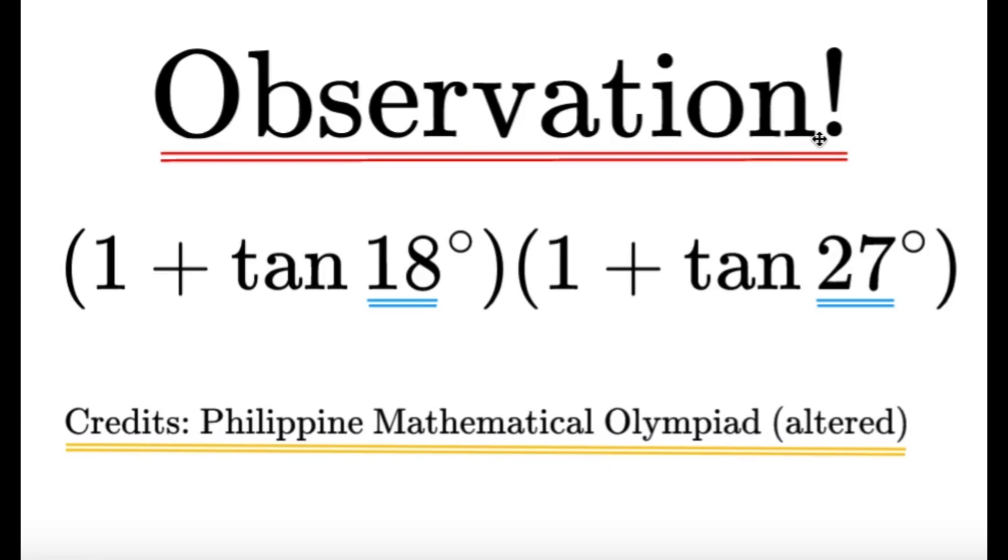And typically, in a question on evaluation, or particularly evaluating trigonometric functions, we really have to observe. Because, as you can see in this case, we're given tangent of 18 degrees and tangent of 27 degrees. Now, these two angles are not really familiar angles. These are not the special angles. It's not even 15 or 75. But there is something to them that we can use. That's going to be the inspiration here.